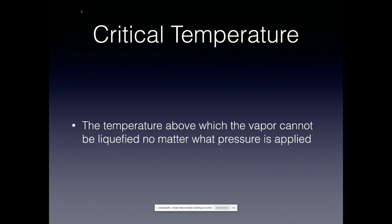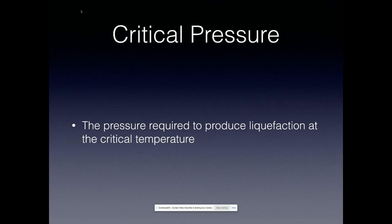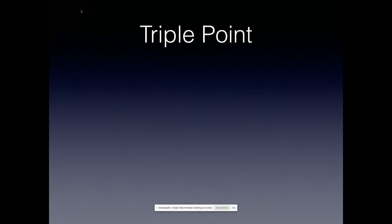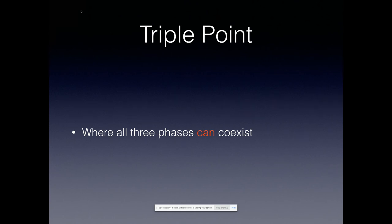The critical temperature is the temperature above which the vapor cannot be liquefied no matter what pressure is applied. The critical pressure is the pressure required to produce liquefaction at the critical temperature. Together they define the critical point. Once you go beyond the critical point, there is no way to turn the gas back into a liquid regardless of pressure. The triple point is the point where all three phases can coexist — it doesn't mean they do, just that they can — and it is defined by a specific temperature and pressure.